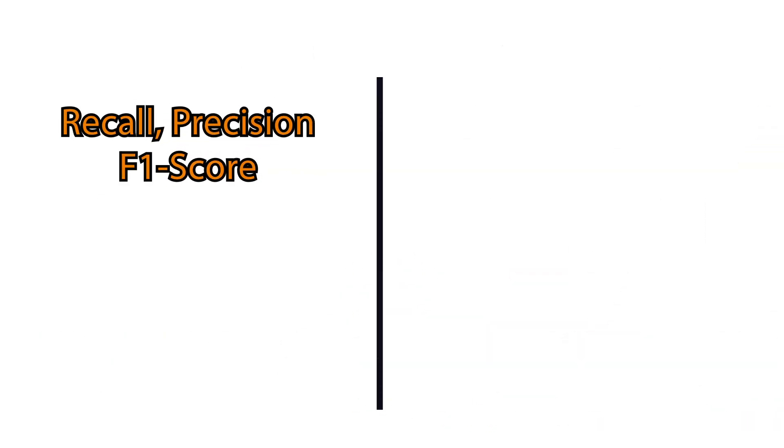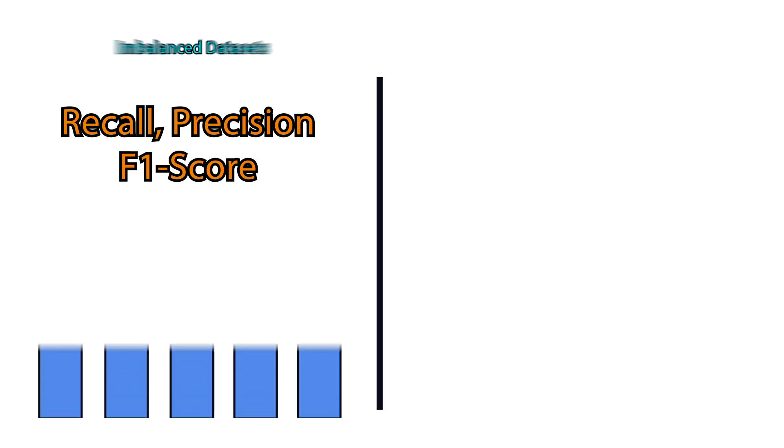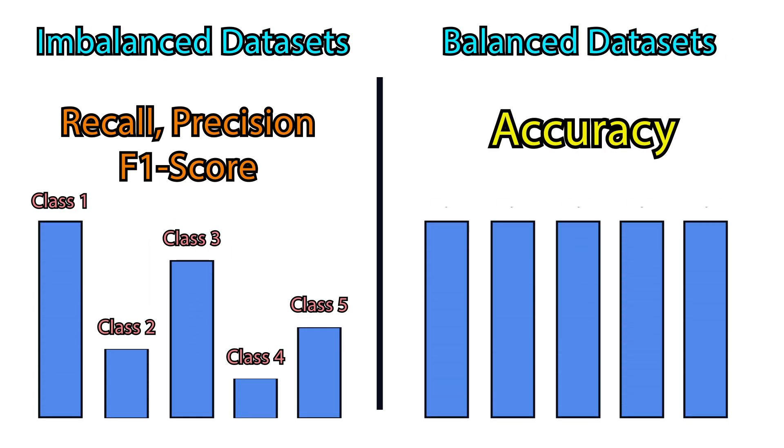Thus, we use recall, precision, and F1 score for imbalanced datasets, while accuracy for balanced ones.